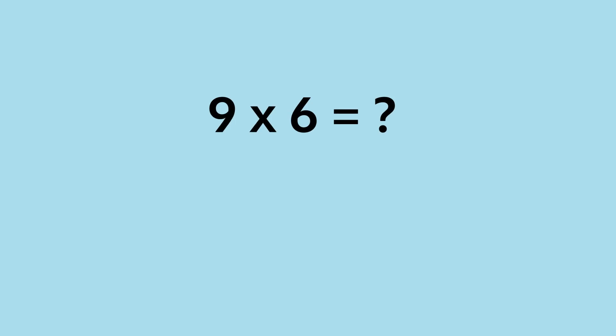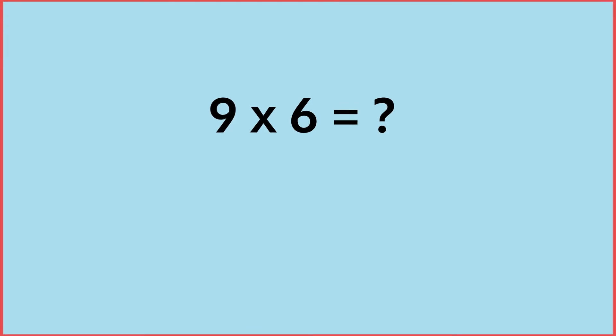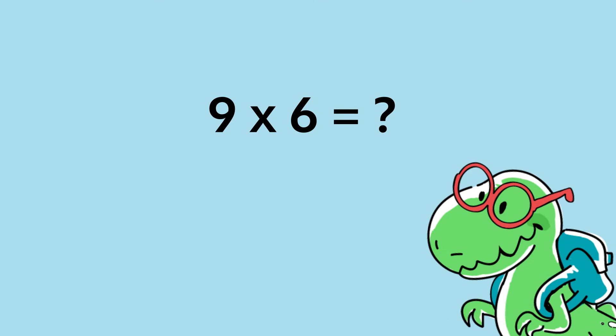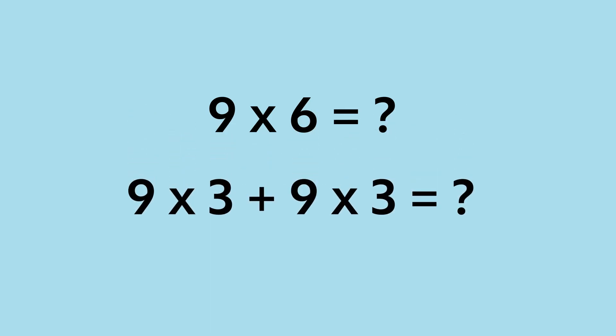Let's use our strategy of decomposing a factor to solve nine times six. Which factor should we decompose? I heard someone say that we should decompose the factor six. We could have decomposed either factor — the six or the nine — but since one of the mathematicians suggested six, let's decompose that factor. If we decompose the factor six into three plus three, that means we can rewrite our problem nine times six as nine times three plus nine times three. Now we have two groups of nine times three. Decomposing the factor of six makes the problem easier to solve.